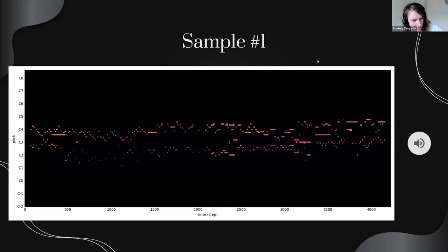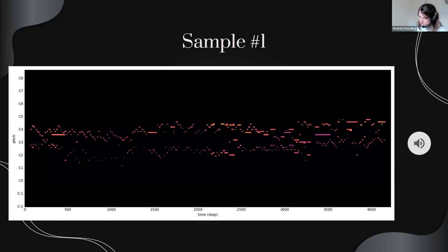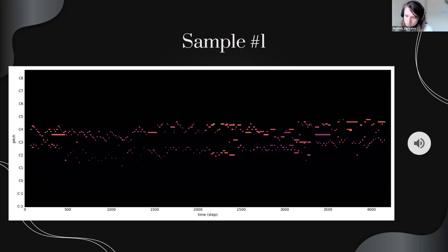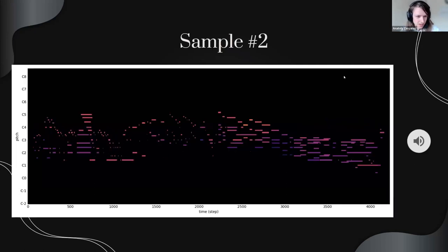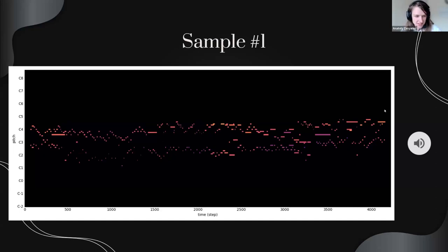Now we're going to play some samples. We have the piano roll right beside the sample. That was the first sample — it was kind of a lot of counterpoint, kind of like a fugue. Let's listen to the second one.